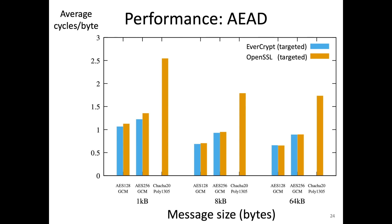We see a similar story when looking at targeted versions of Authenticated Encryption, or AEAD. Here the x-axis shows authenticated encryption for increasingly large messages, while the y-axis shows performance in cycles per byte encrypted — so lower is better. For each message size we show two variants of AES as well as OpenSSL's targeted version of ChaChaPoly. All AES implementations consistently outperform ChaChaPoly thanks to Intel's AES-NI instructions, and EverCrypt shown in blue is consistently matching or beating OpenSSL's performance in orange. For large enough messages, both versions require less than one cycle per byte to provide authenticated encryption.